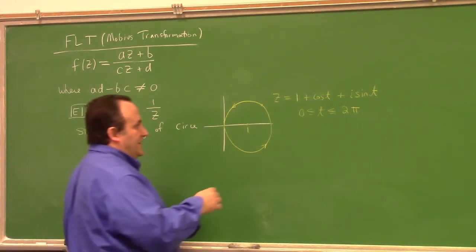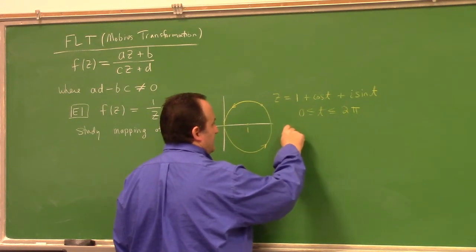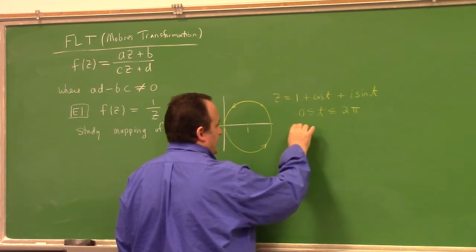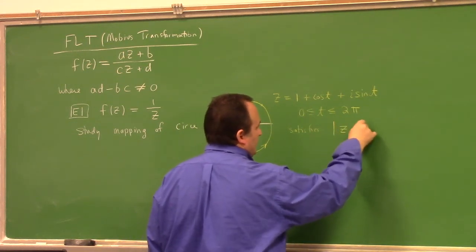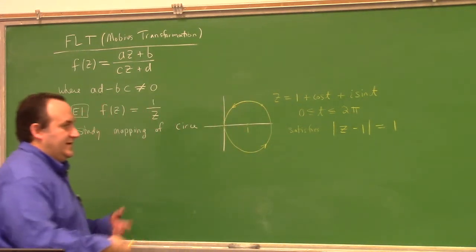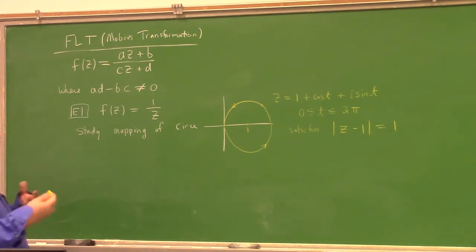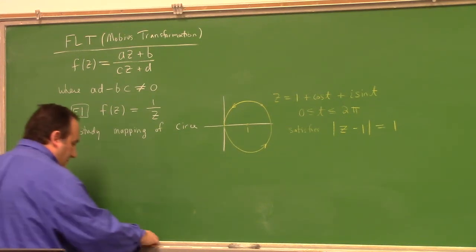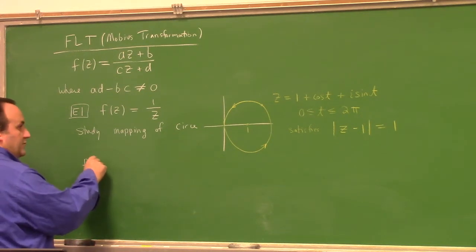You can verify that this satisfies |z − 1| = 1, which is the collection of all points with distance 1 from center 1. That is an honest parametrization of that circle. Let's feed it to the reciprocal map: f(1 + cos(t) + i·sin(t)) = 1/(1 + cos(t) + i·sin(t)).